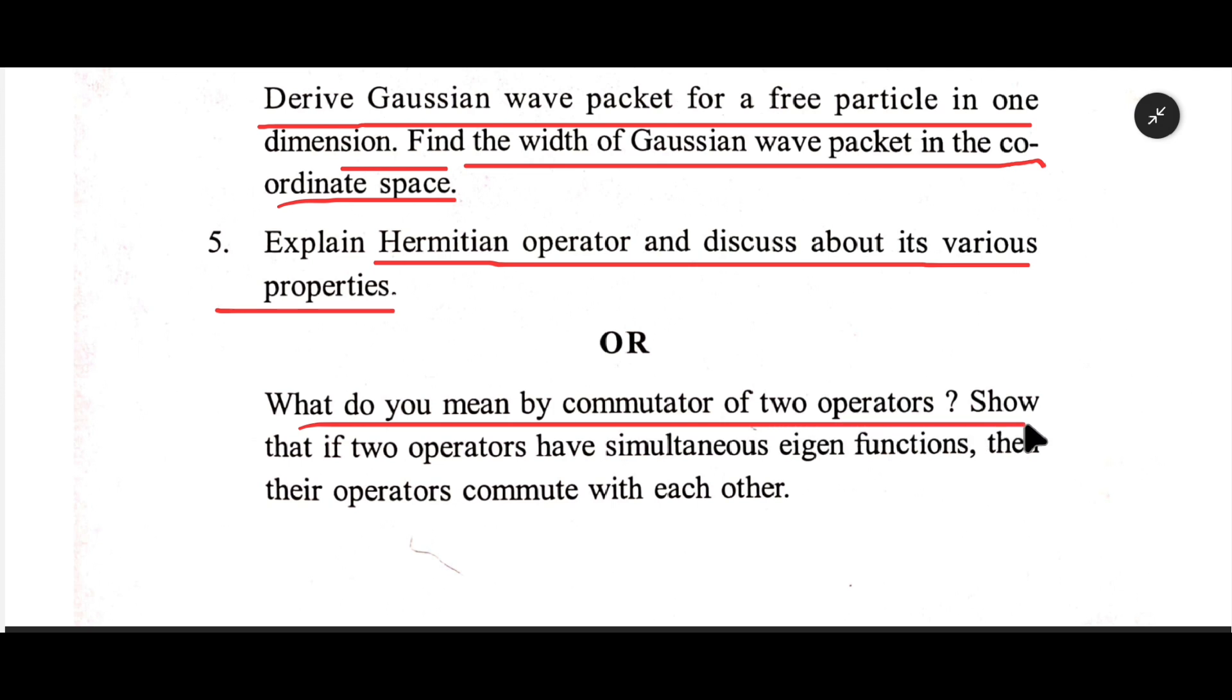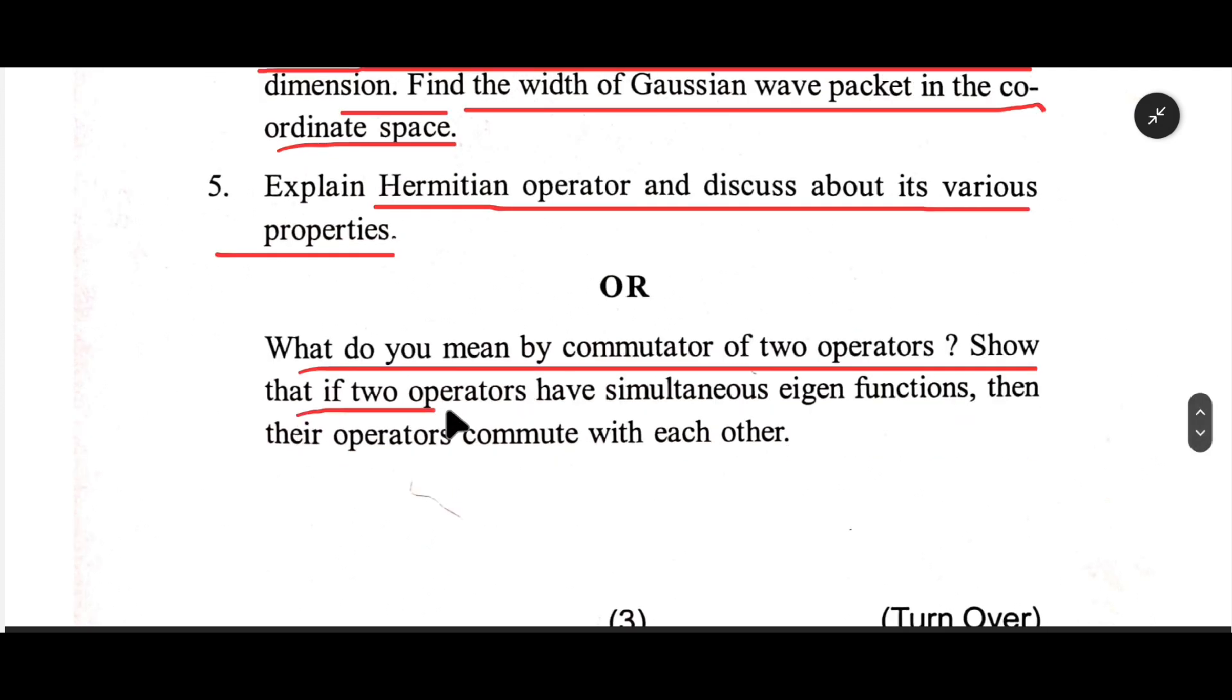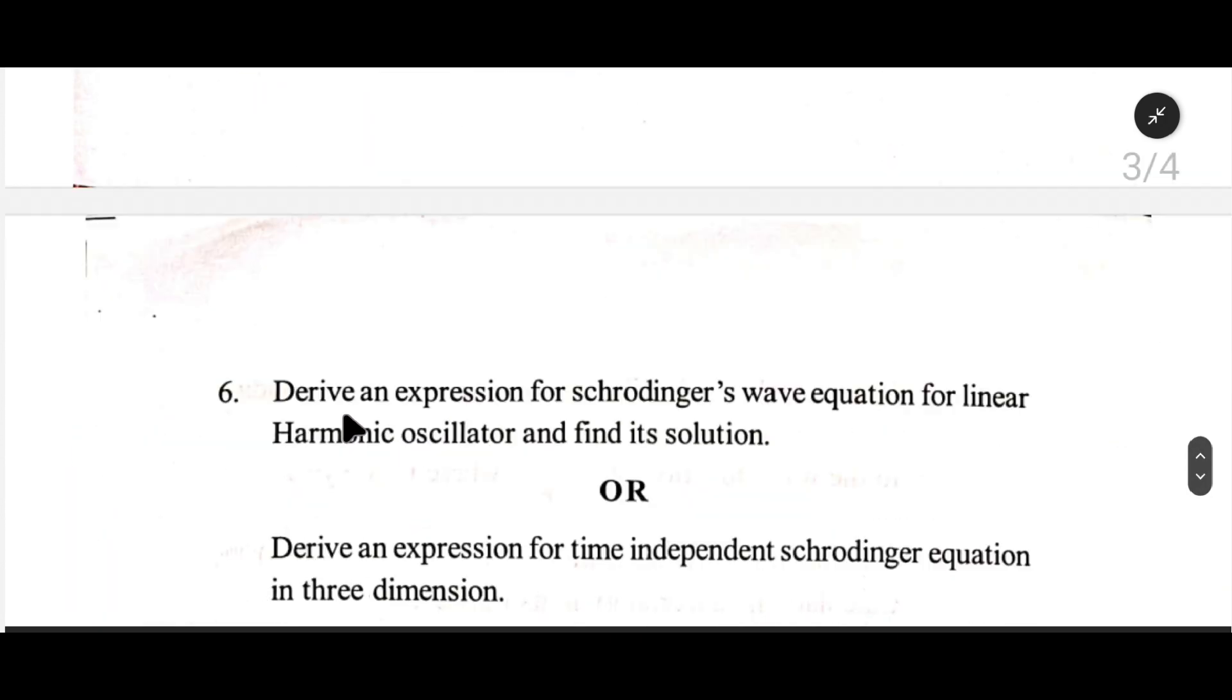e. What do you mean by commutator of two operators? f. Show that if two operators have simultaneous eigenfunctions, then their operators commute with each other.